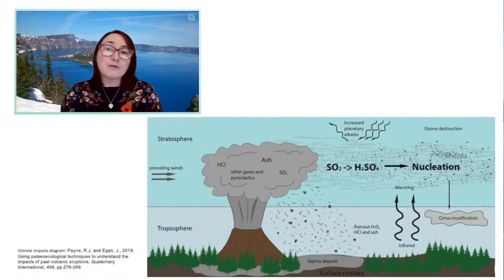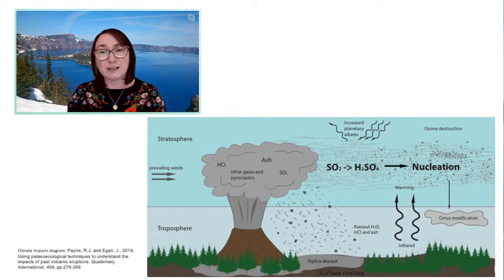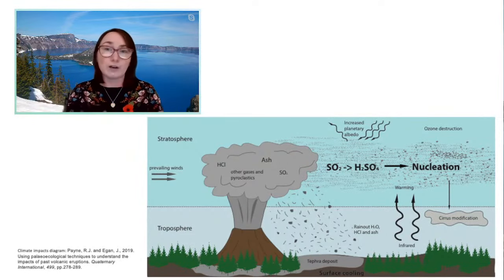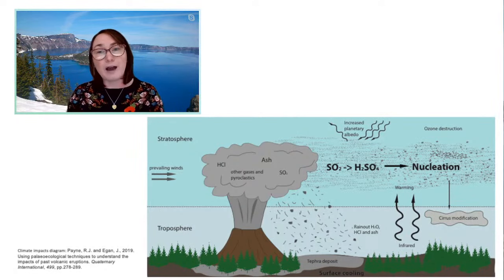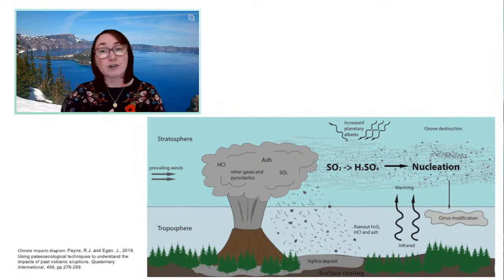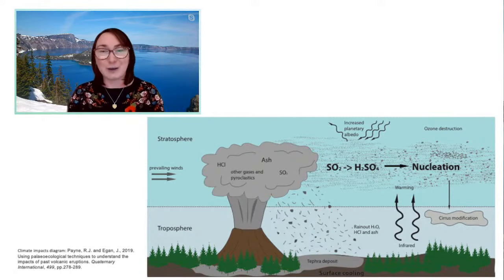How extensive that cooling is felt depends on where the volcano erupts. If a volcano erupts in the northern hemisphere, the cooling will primarily happen within the northern hemisphere. But if an eruption occurs around the equator, it would cause global cooling. So the location of the volcanic eruption determines how extensive that cooling effect is.